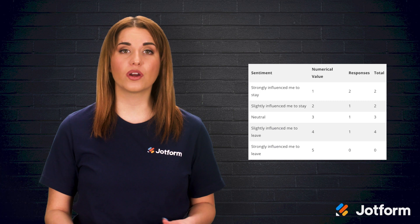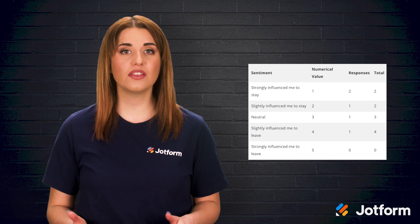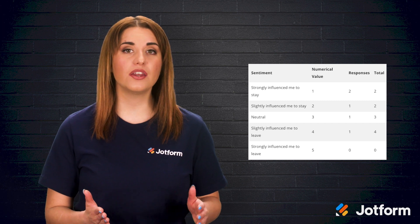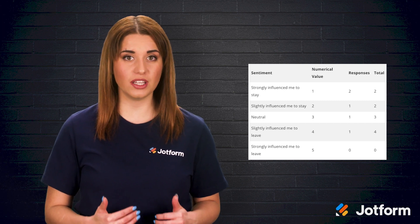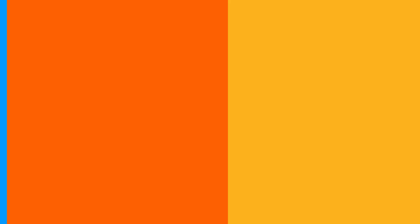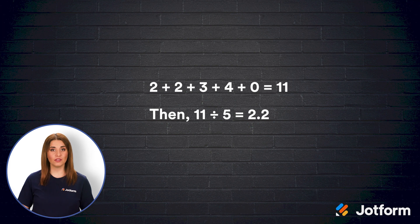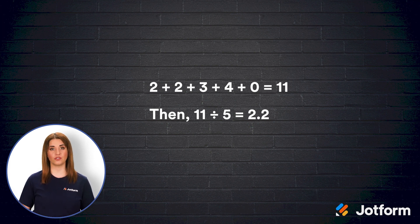Here is an example of work-life balance responses and how to quantify them. You can see the numerical value given to the answer type, the number of responses received for each answer type, and the total value for your responses. From there, you'll add up the total and divide that number by the total number of respondents to get your final sentiment score. In our example, you'll divide the score of 11 by the 5 employees who answered, which gives us an average sentiment score of 2.2 for work-life balance.